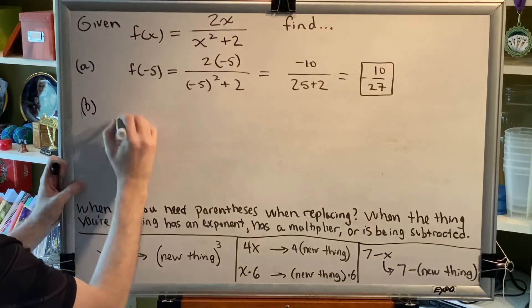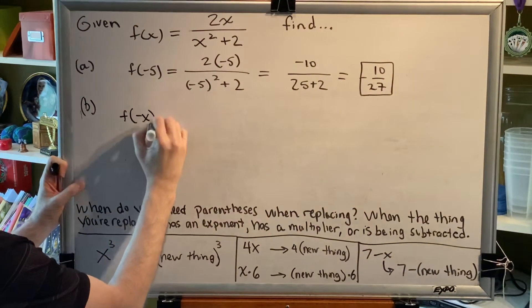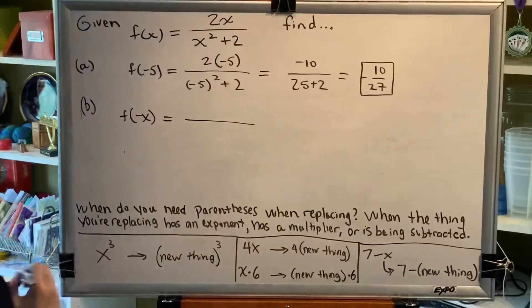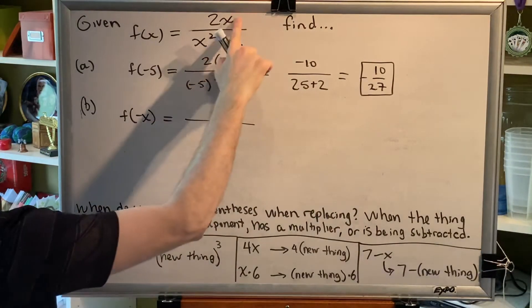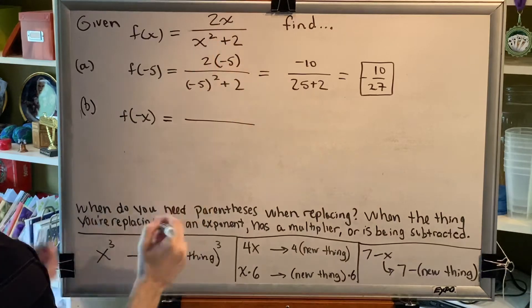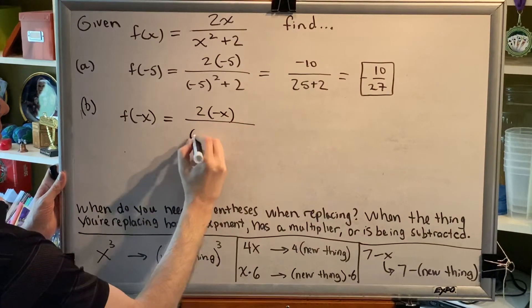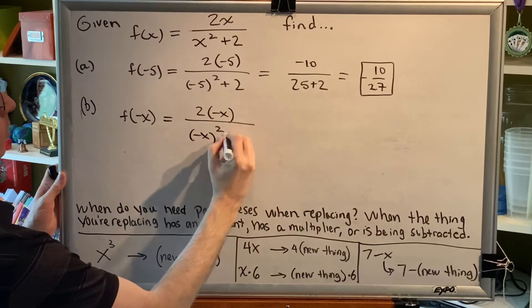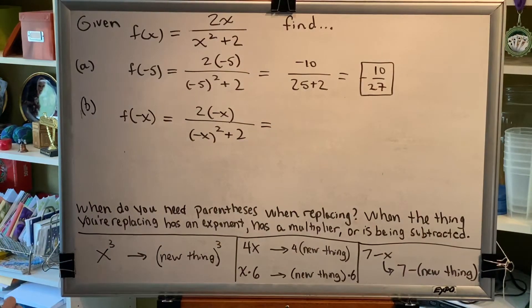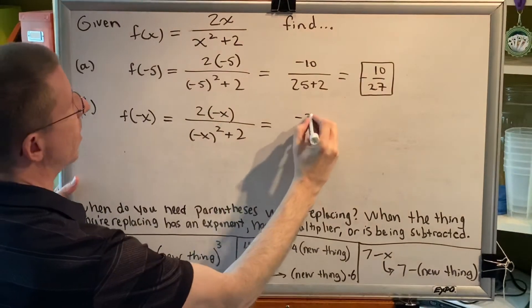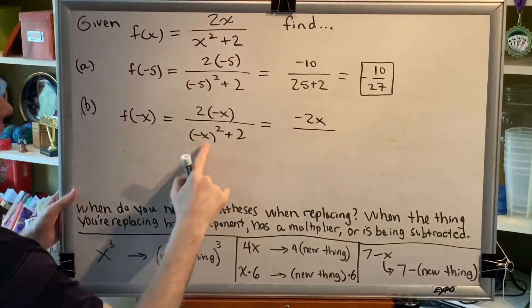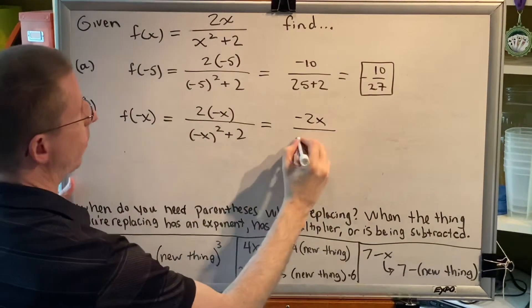Part b: Find f of negative x. Well, same as before, x has a multiplier and x has an exponent, so when we replace, we have to use parentheses. So that's what it will look like. 2 times negative x is negative 2x. A negative x squared is positive x squared.